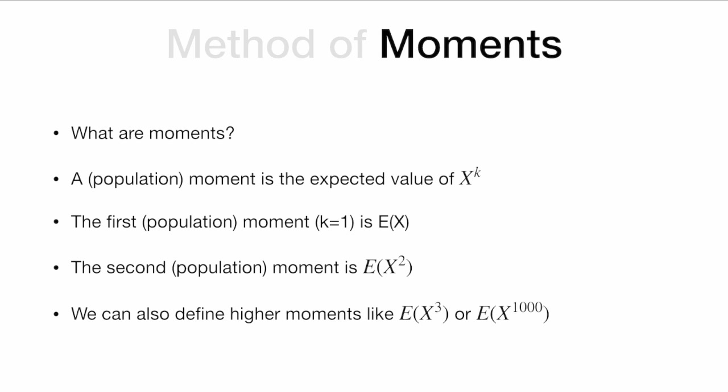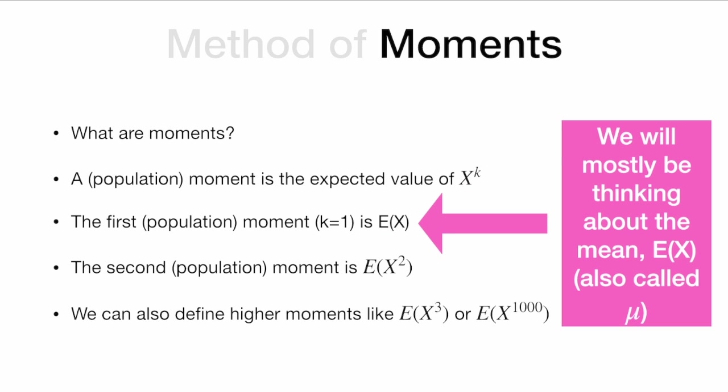What is a moment? A population moment is the expected value of the random variable X to the k. So the first population moment is E[X]. The second population moment is E[X²]. We can also define higher moments like E[X³] or E[X^1000]. We will mostly be thinking about the mean, E[X], which we'll also call mu.